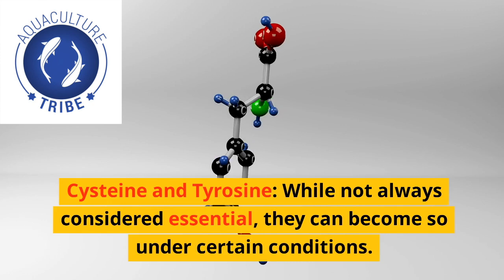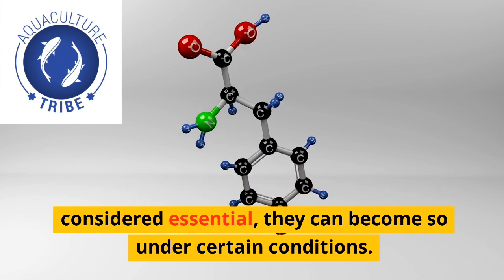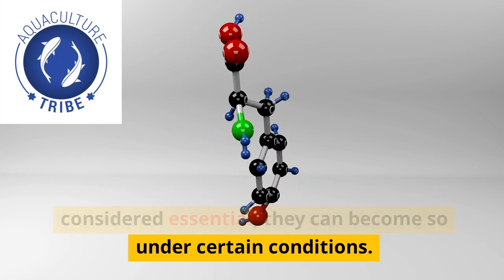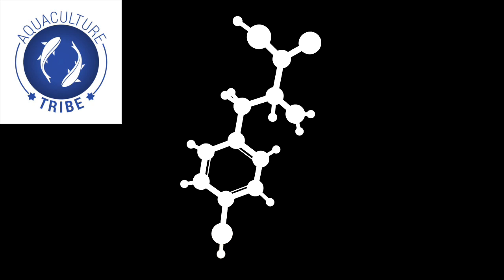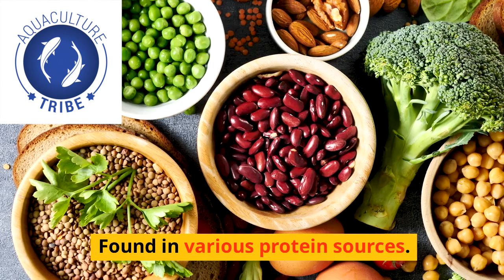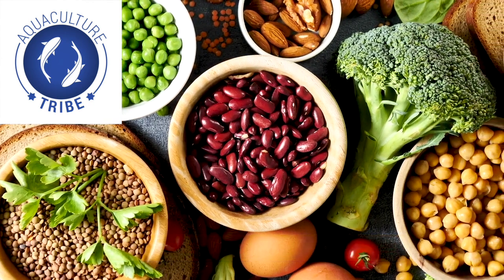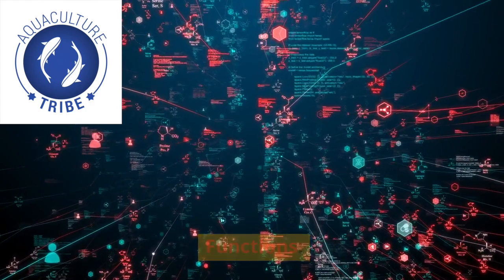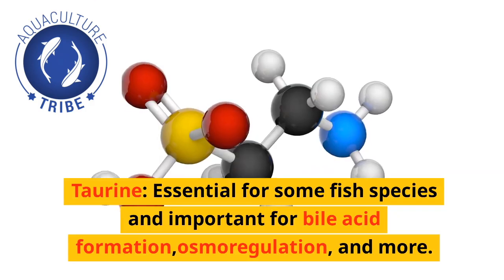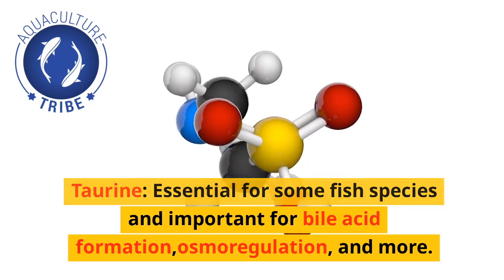Conditionally essential amino acids — cysteine and tyrosine — while not always considered essential, they can become so under certain conditions, and are found in various protein sources.